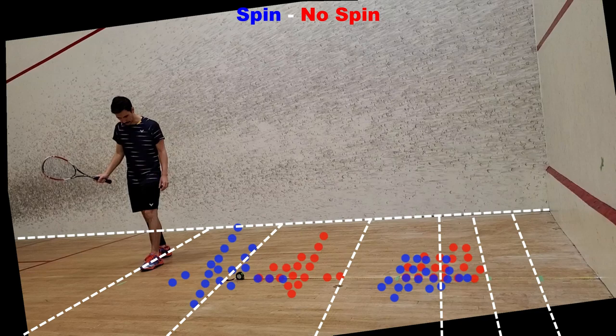This result would indicate that, purely looking at the location of the bounces, it makes more sense to hit drops with no spin.